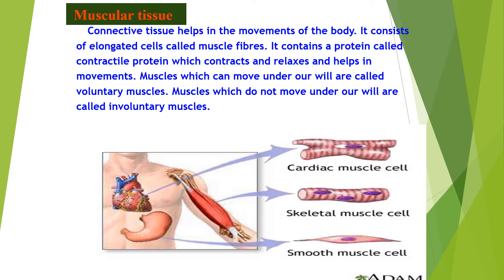It consists of elongated cells called muscle fibers. It contains a protein called the contractile protein which contracts and relaxes and helps in movements. Muscles which can move under our will are called voluntary muscles. Muscles which do not move under our will are called involuntary muscles.